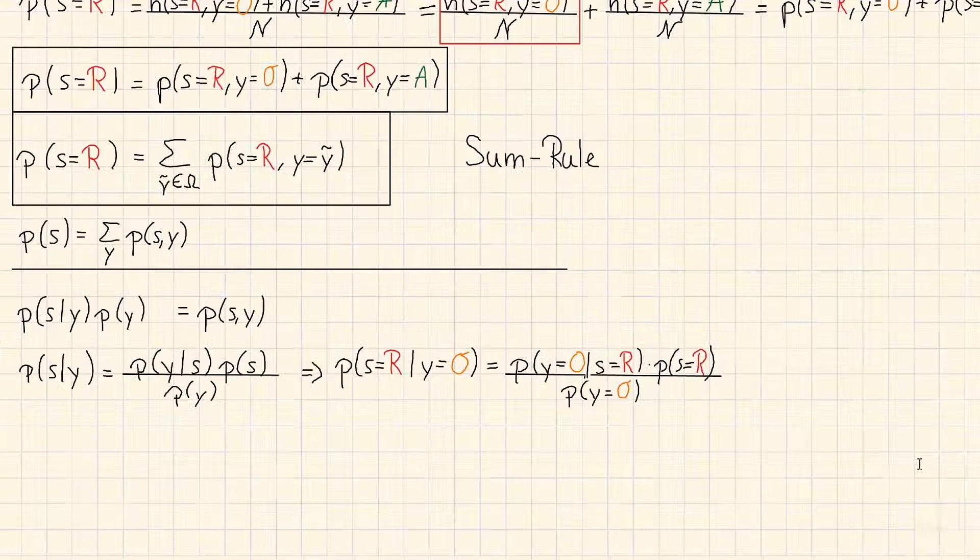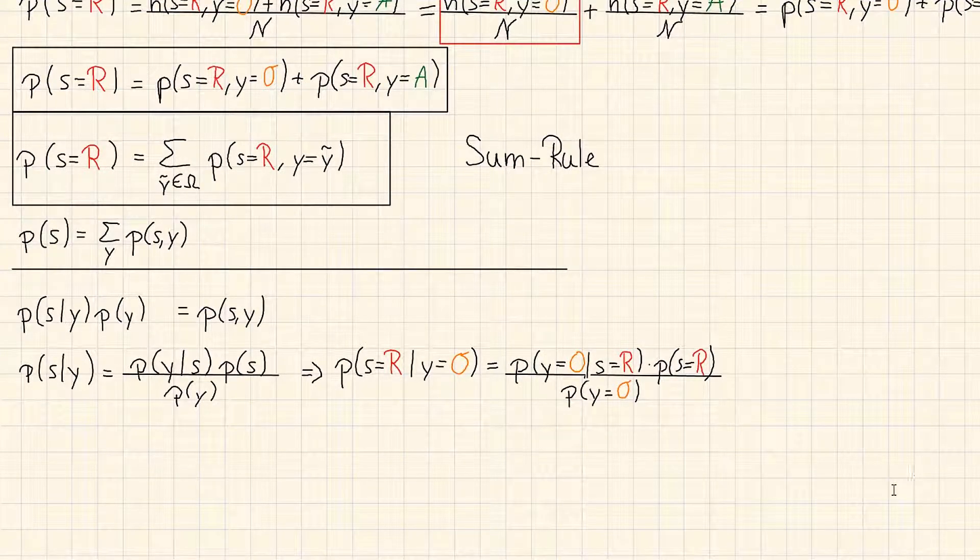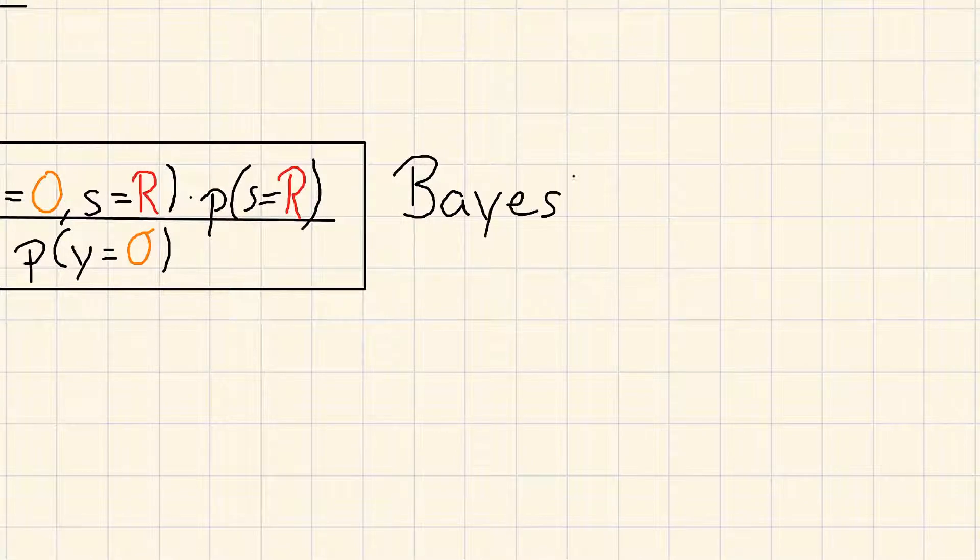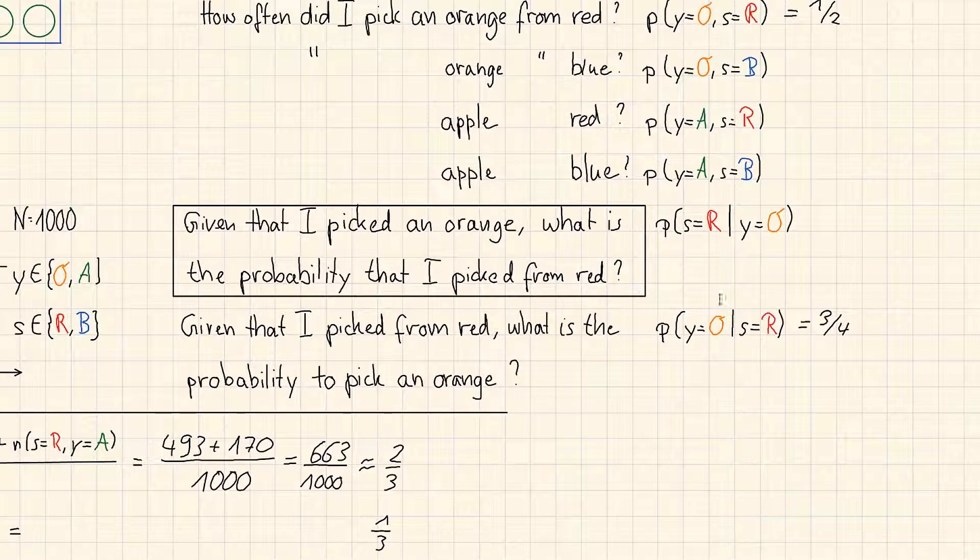So this formula plays a very central role in unsupervised machine learning. It is called Bayes' rule. What it does, it takes one conditional probability and turns it around to the other conditional probability.